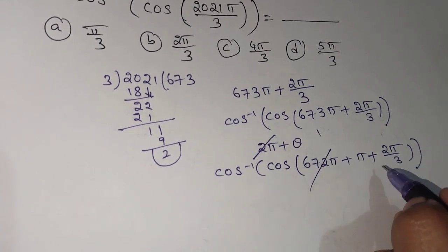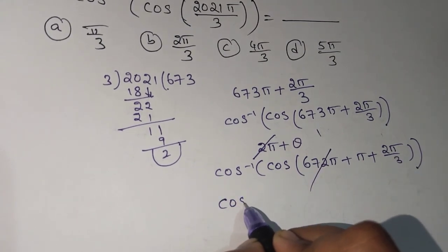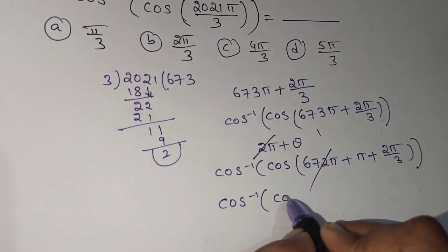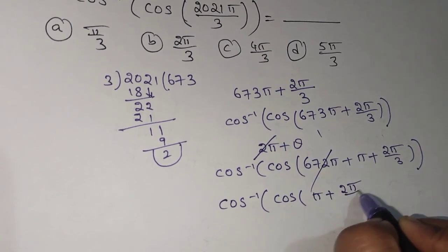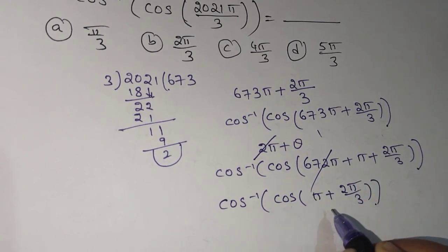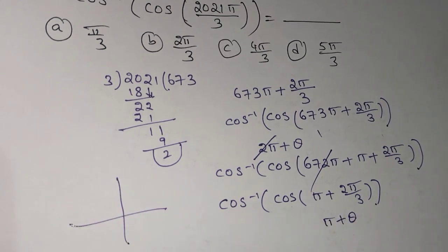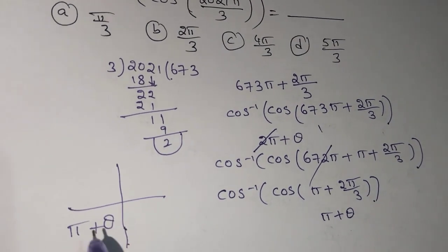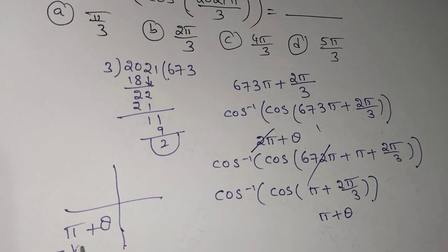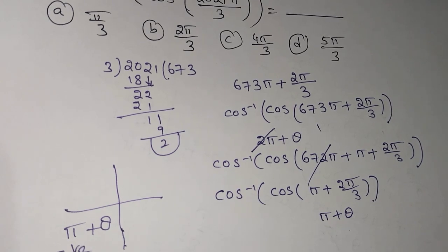I will take the remaining θ: cos inverse of cos of π plus 2π/3. If you observe here, π plus θ, that is third quadrant. 180 plus θ, that is third quadrant. In the third quadrant, cos is negative.